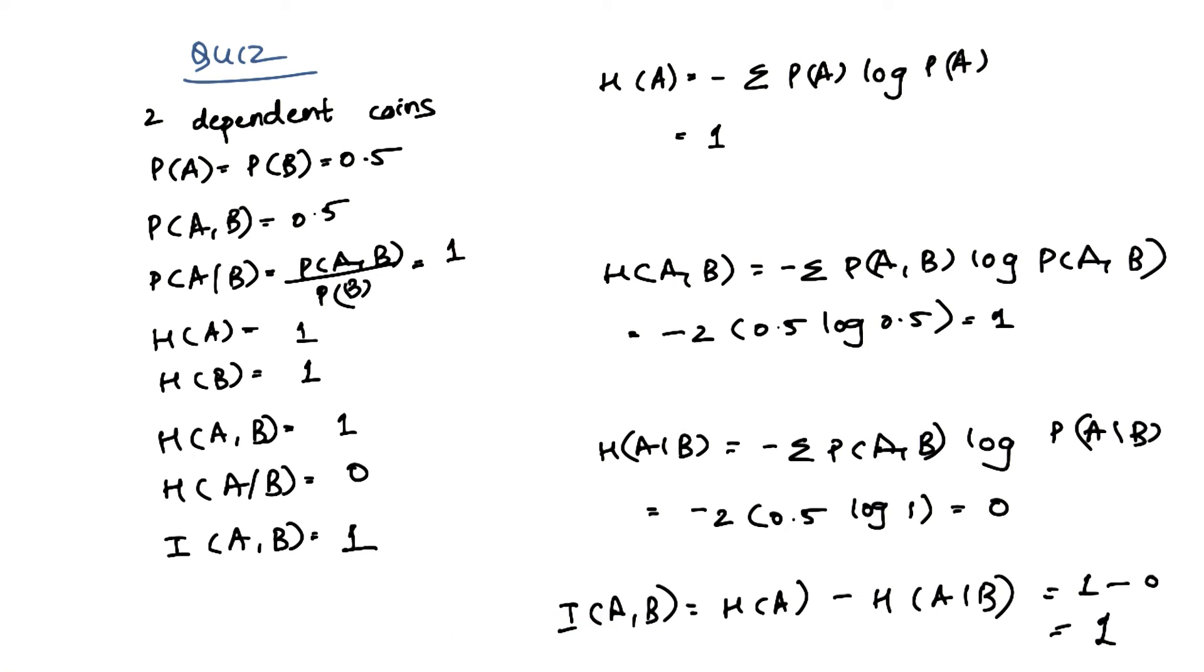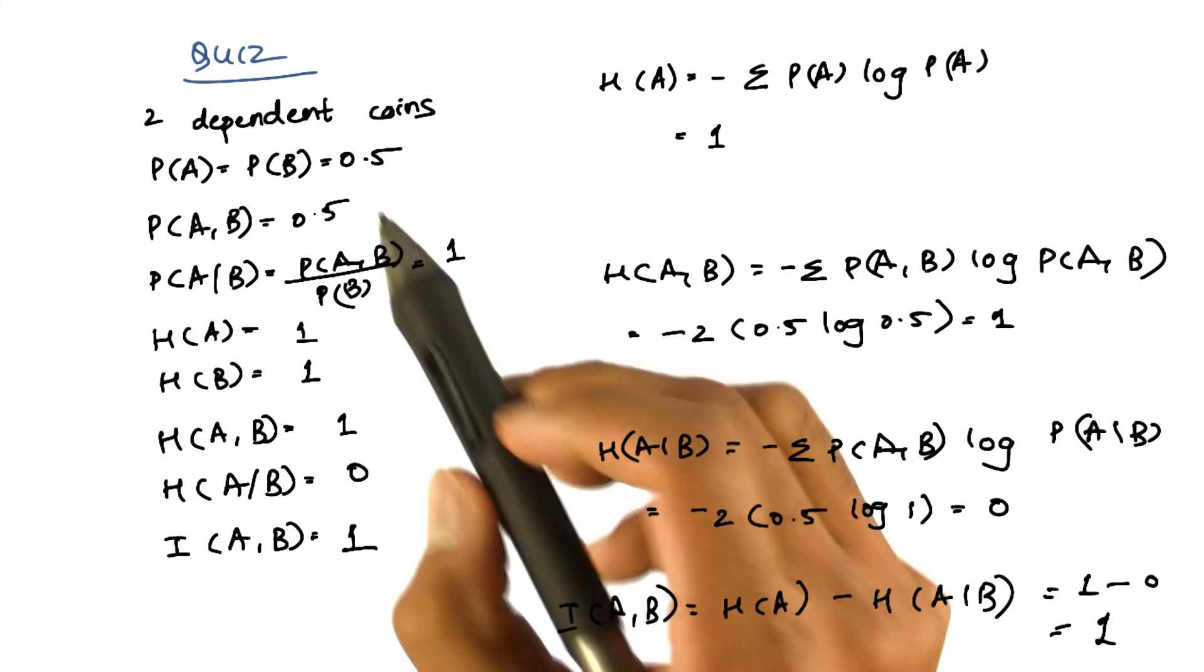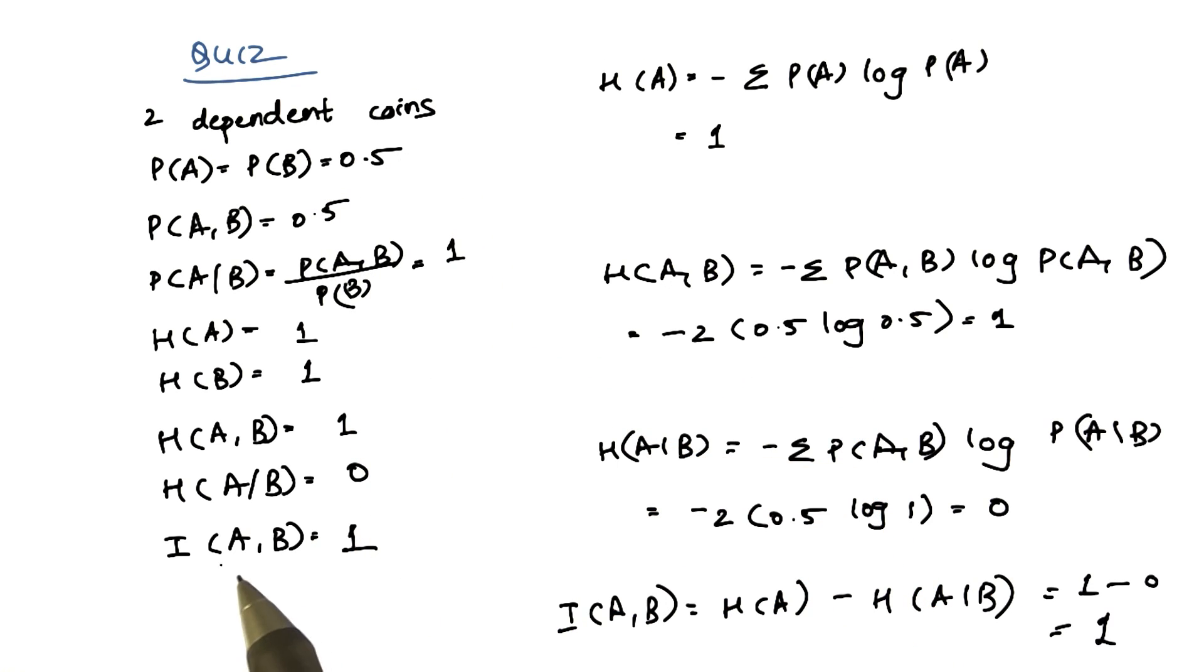So the mutual information in this case is 1, while in the previous case it was 0. So since these coins are dependent on each other, the random variable A gives us some information about the random variable B. This tells you how mutual information works.